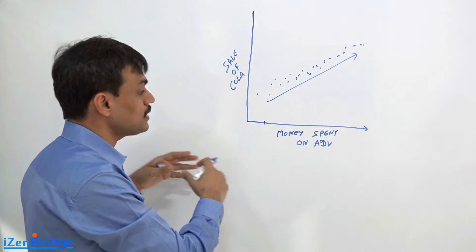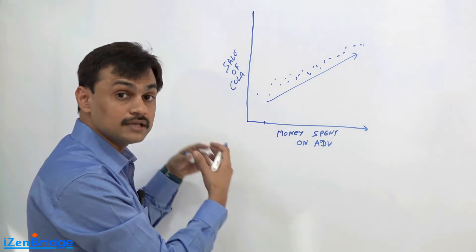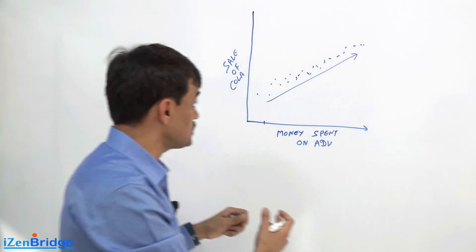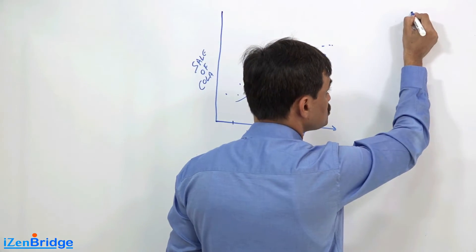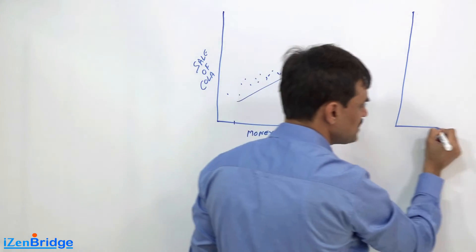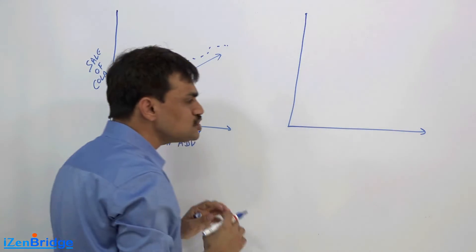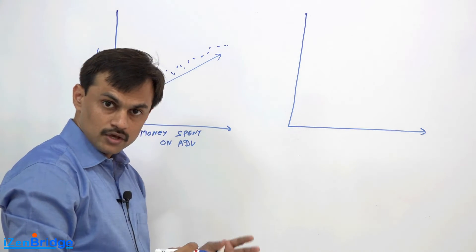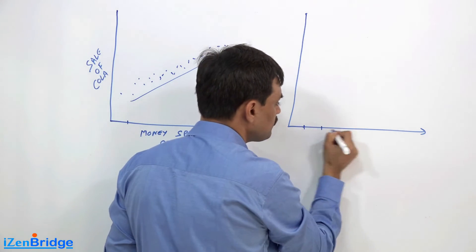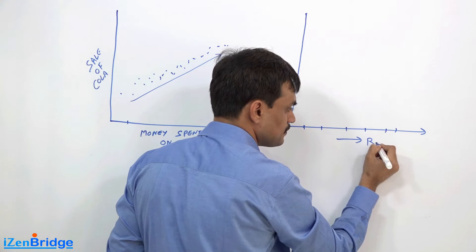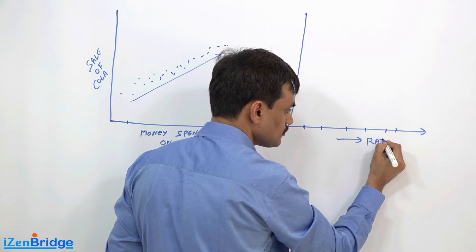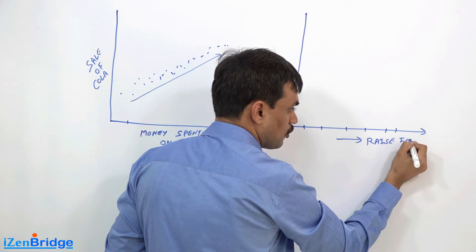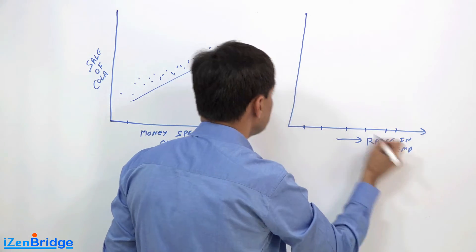You may want to check with another factor. You may see, okay, is there any change in temperature that impacts the cola sale? So you may have different temperatures - here you can see a rise in temperature of environment, and here you have cola sale.